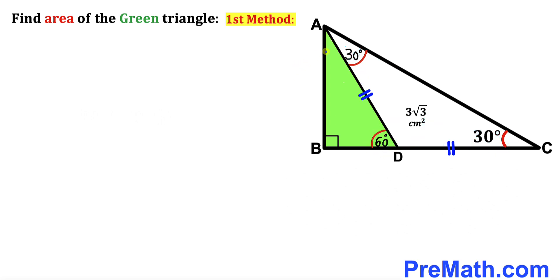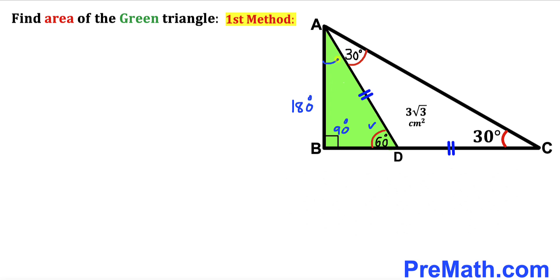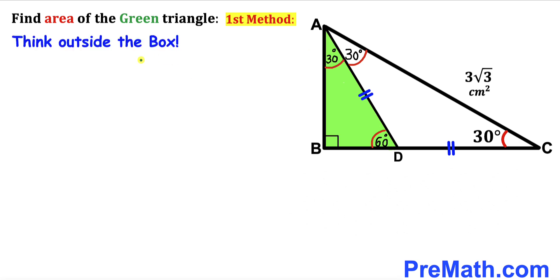Now let's focus on the green right triangle ABD. We know this angle is 90 degrees, angle ADB is 60 degrees, and since the sum of all interior angles equals 180 degrees, the remaining angle at B has got to be 30 degrees.